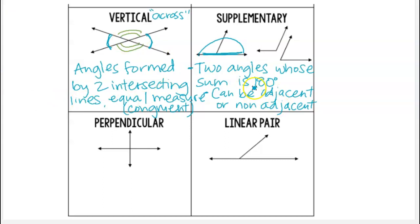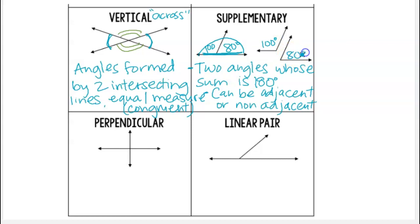For example, I could have one angle be 100 degrees and the angle next to it be 80 degrees. That would total 180 degrees whether these are adjacent or not.